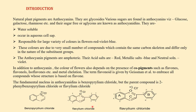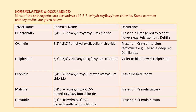We can see there are three rings in flavylium chloride: A, B, and C. When we degrade anthocyanin, the degradative products give the idea of the structure of ring A and B with the position of substituents. Most anthocyanins are derivatives of 3,5,7-trihydroxyflavylium chloride. Some common anthocyanidins are pelargonidin, cyanidin, delphinidin — these are hydroxyflavylium chlorides — as well as peonidine, malvidin, and hirsutidin, having substituents of hydroxy and methoxy groups.